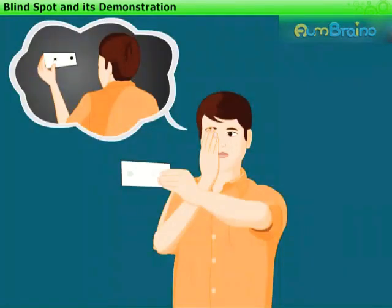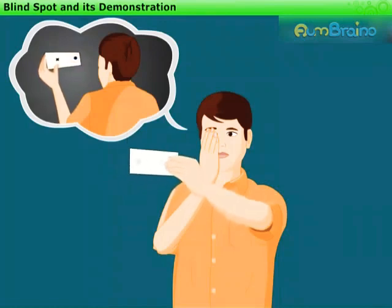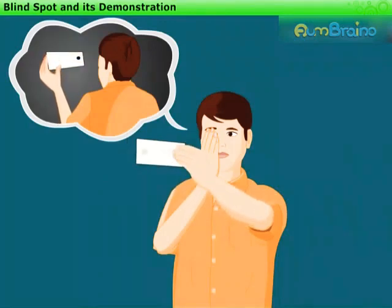Now close your right eye. Look at the round mark now and repeat the activity. Again, you will find that the cross disappears at the same point.